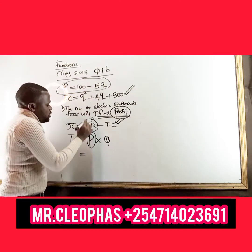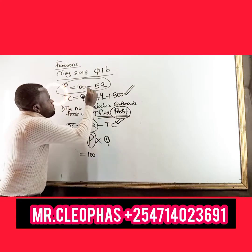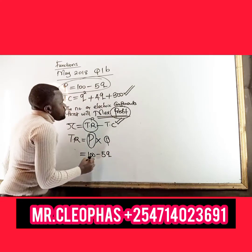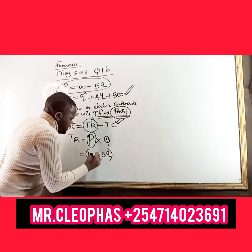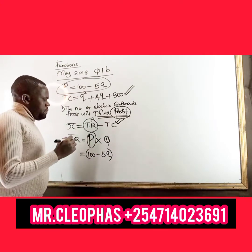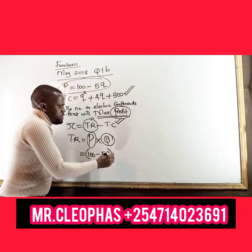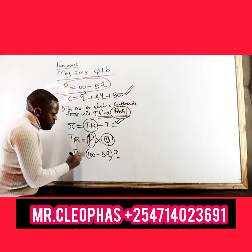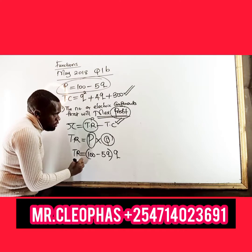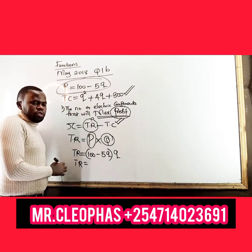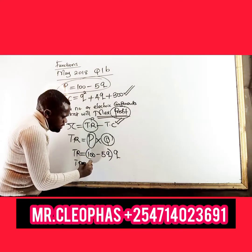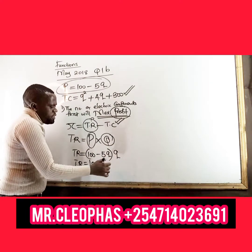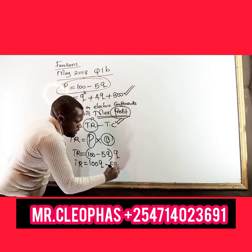So instead of writing P, I will have the equation 100 minus 5Q, multiplied by Q, because Q is the number of units. That gives us total revenue. So the total revenue function equals 100Q minus 5Q squared.